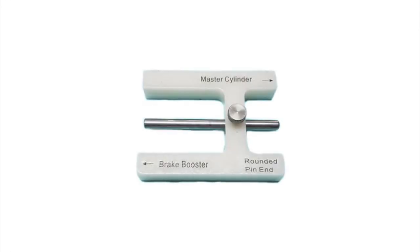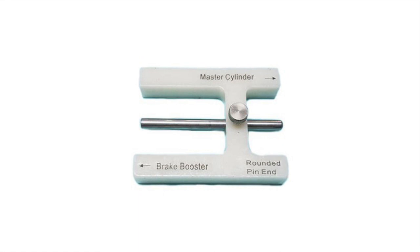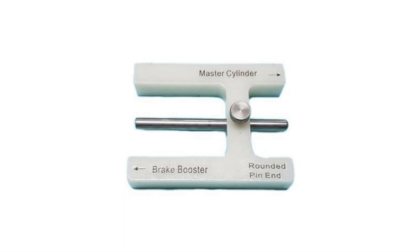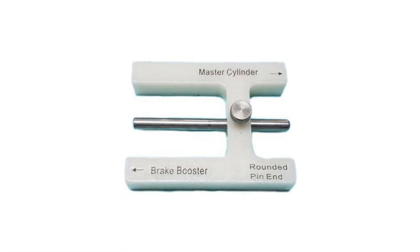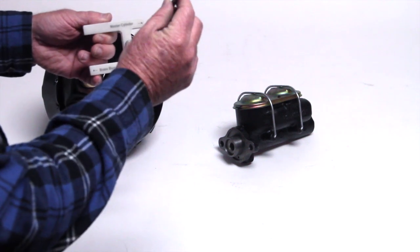As you can see, the tool is marked pretty clearly as far as which direction is the master cylinder, which direction is the brake booster. And down here at the bottom, you notice it says the rounded pin, and it's talking about this pin right here. One end is round and one end is flat. The flat end goes on the brake booster side.